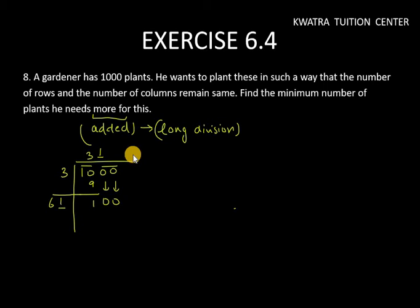We need to put 1, because both numbers are the same. So 100 minus 61 is 39. So leftover part is 39. Remainder is 39. This is proof that our number is not a perfect square.